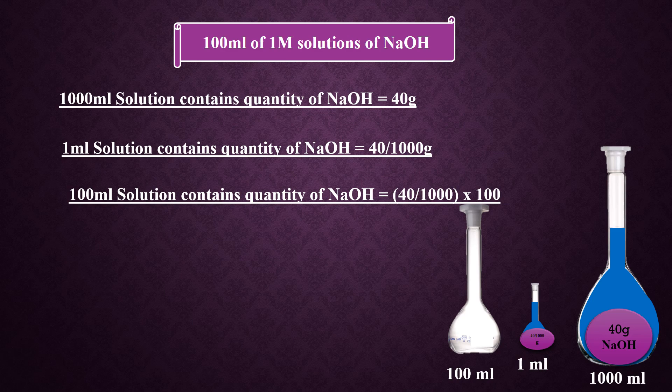If you want to prepare 250 milliliters of solution, put 250 in the calculations instead of 100. If you want to prepare 500 milliliters, put 500 instead of 100, and so on, according to requirement. The answer is 4 grams.